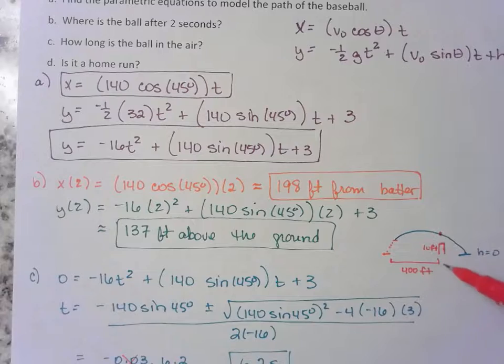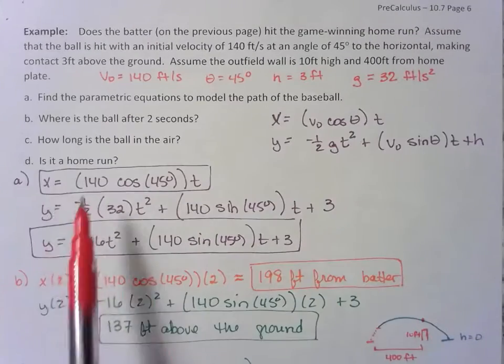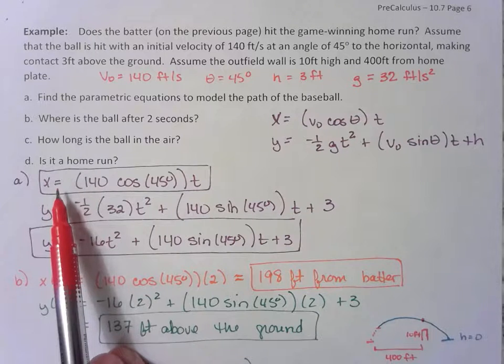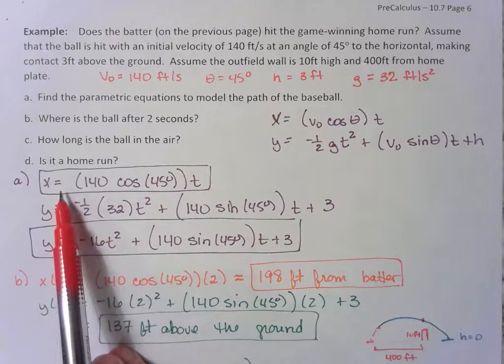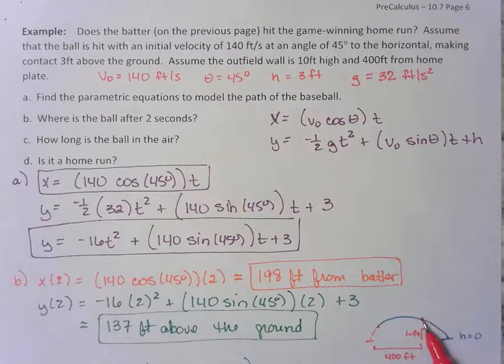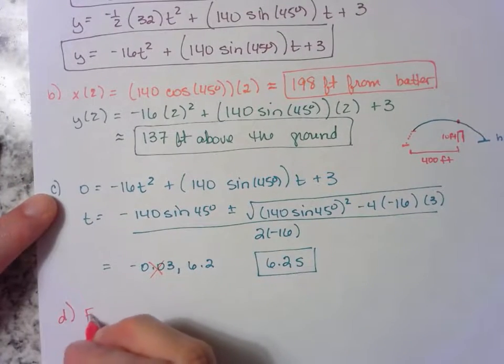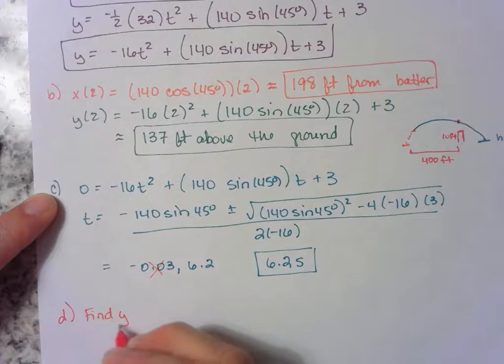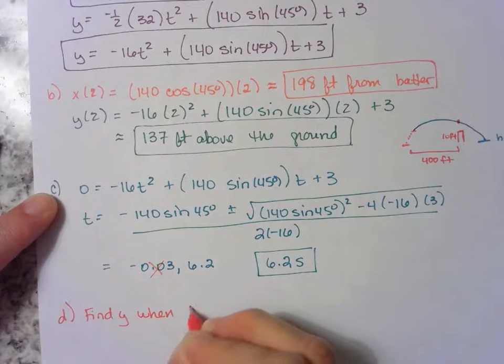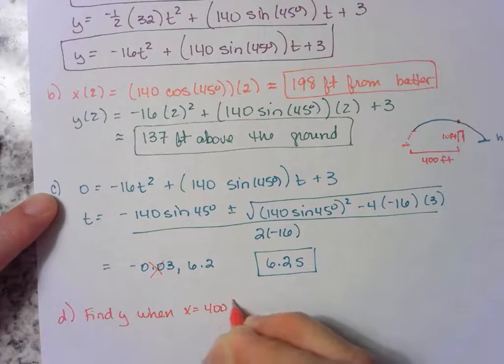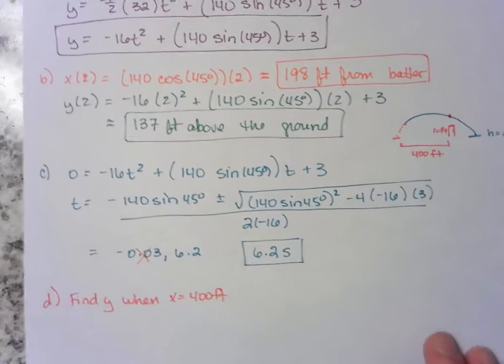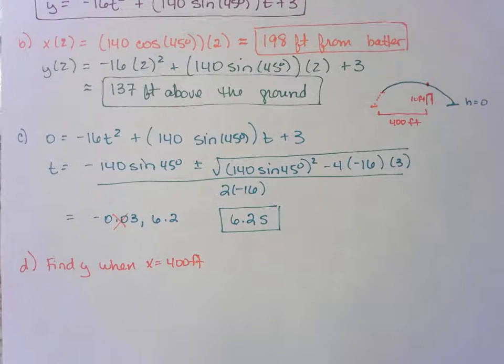So we want to know how tall is this ball or how high in the air it is once it reaches 400 feet from the batter. Well, wouldn't this be the horizontal distance? And isn't that our x portion of the parametric equations? So we want to know how high is this ball when x is 400 feet. That's what we're looking for right there. Find y when x is 400 feet.